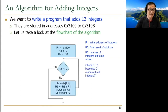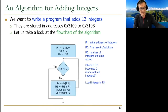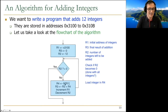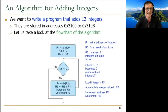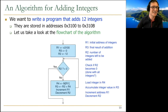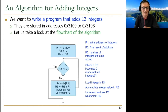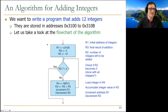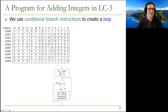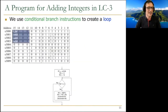We check: are we done with all integers? If not, we load the first integer into a register — R1 specifies the address. Then we accumulate the integer value in R3, increment the address, and decrement the count of integers. Then we keep looping. The next step is translating all of this to instructions in the ISA, directly into machine code. We use conditional branches to create a loop.